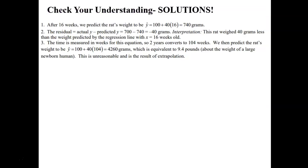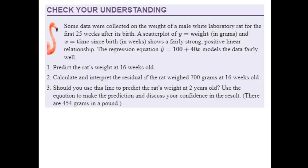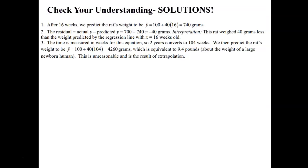For the first question, substituting 16 weeks into our equation, this model predicts the rat would weigh 740 grams. For the residual at 16 weeks: the actual weight is 700 grams, but the predicted weight is 740 grams. So 700 minus 740 equals negative 40 grams. The interpretation: the rat weighed 40 grams less than the weight predicted by the regression equation at 16 weeks old. That's how we interpret residuals with context.